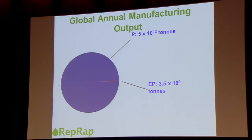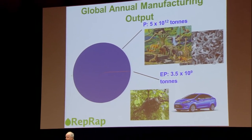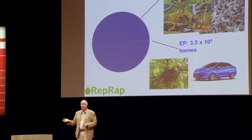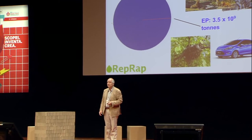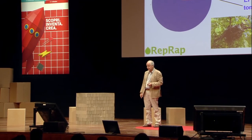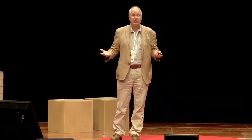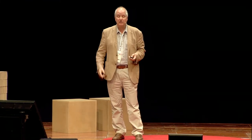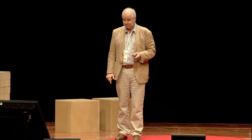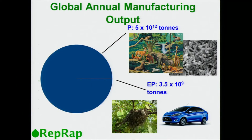What are P and EP? P is living organisms — trees, and much more importantly, bacteria. They are the vast majority of things that get made in the world every year, 1,000 times more important than the other part. The P stands for phenotype, the biological concept which we should come to in a moment.